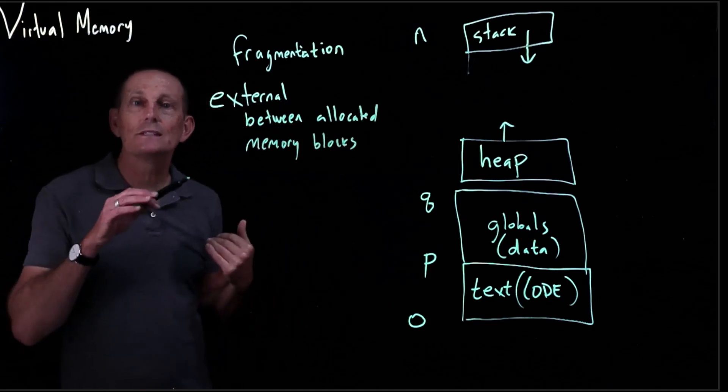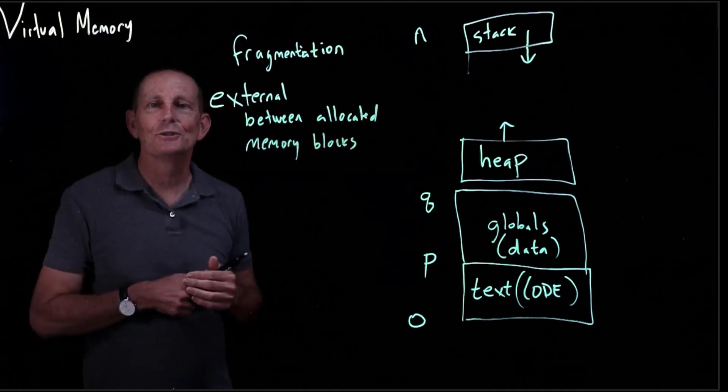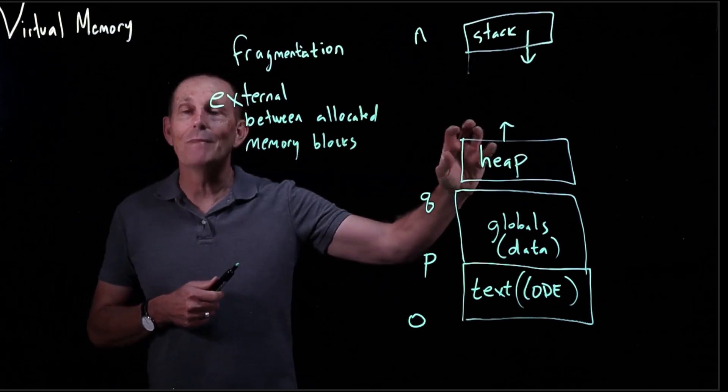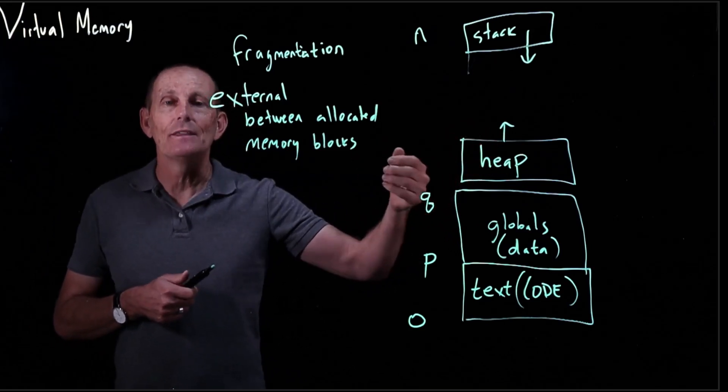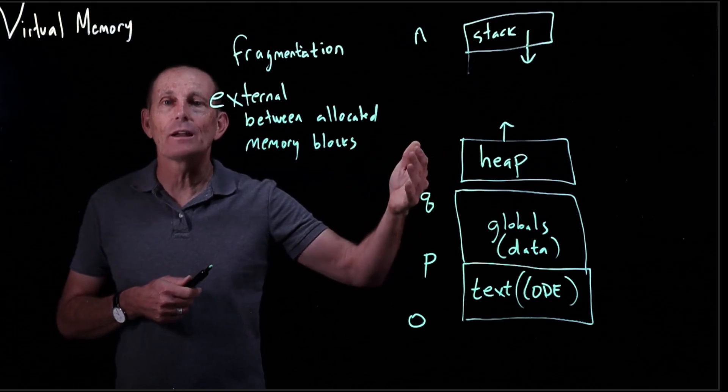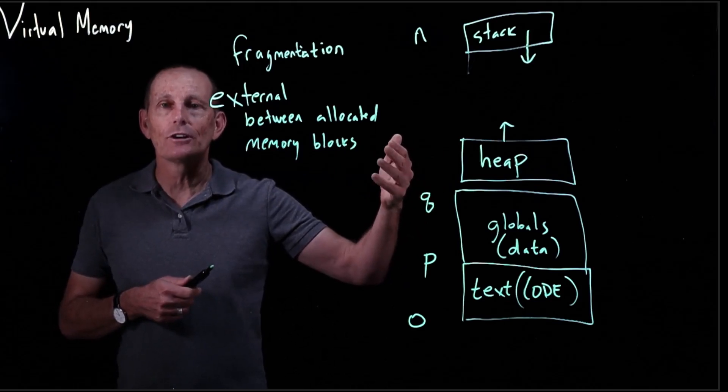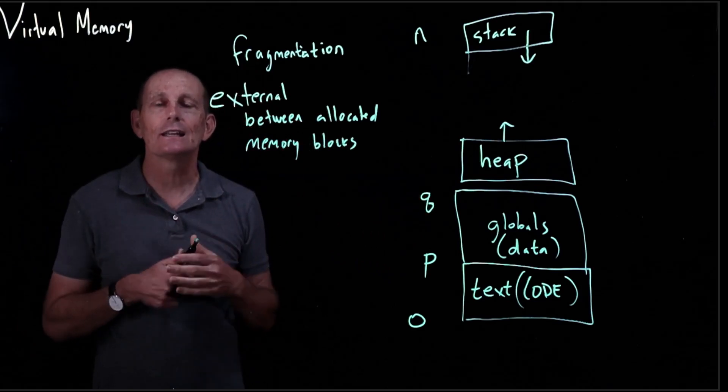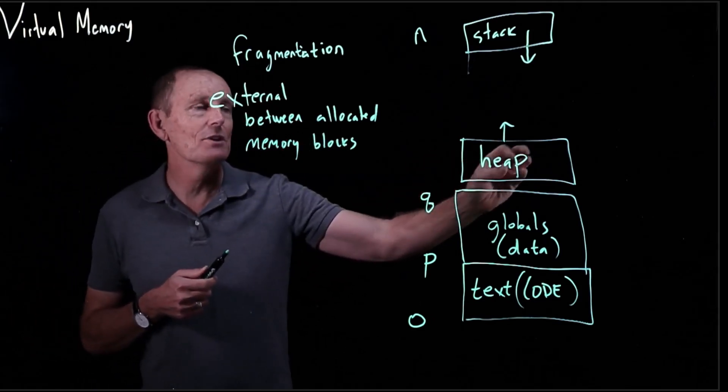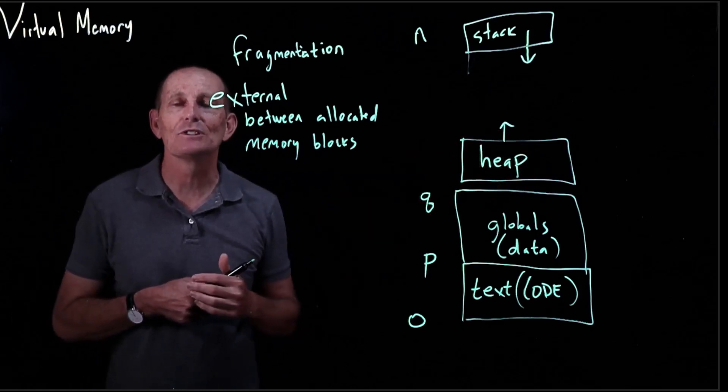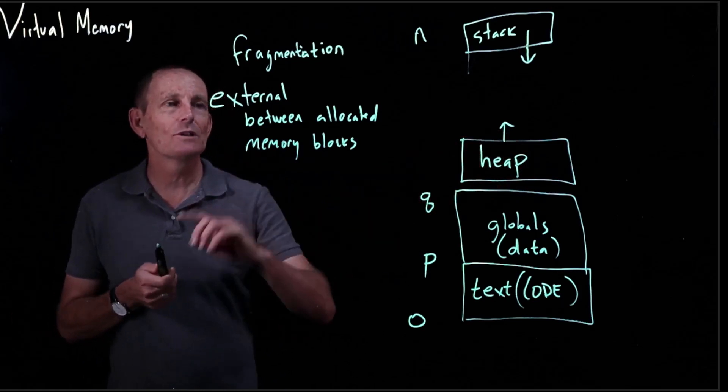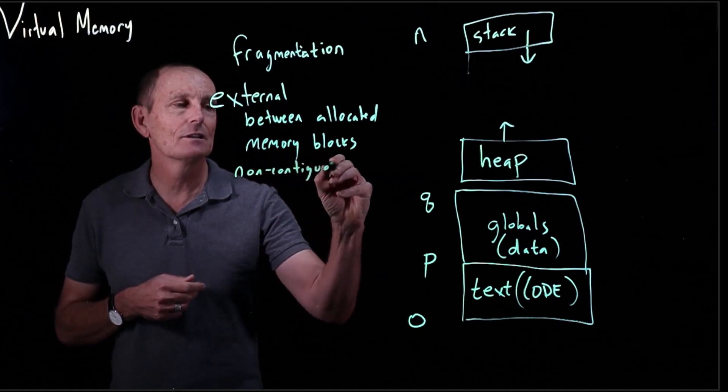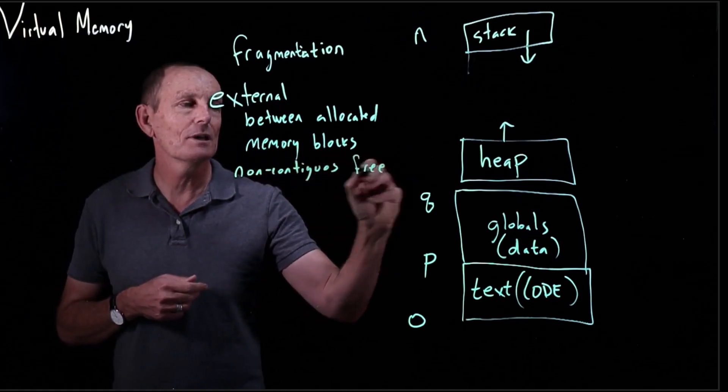And this is a problem not just for, let's say, placing processes into memory. It also has to do, for instance, for this heap. You're doing a bunch of mallocs, which is allocating memory. And then you may have this external fragmentation that occurs because the pattern of allocations and deallocations that you've done means that there is some non-contiguous space. So this is always a problem where we have non-contiguous free space.